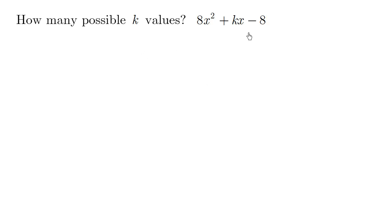So how many k values for this question? This is related to factoring. Using the rainbow method of factoring, we're going to start the pattern by multiplying the two outer numbers.